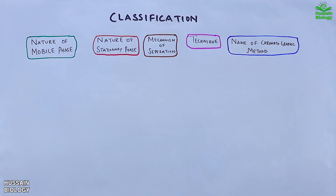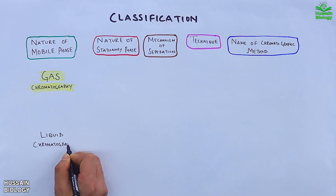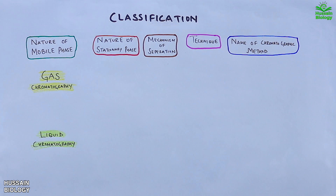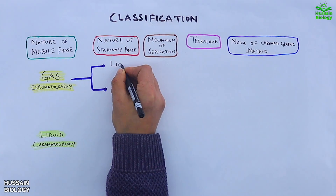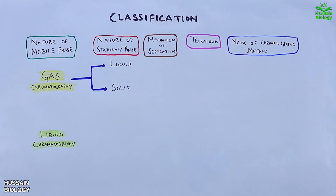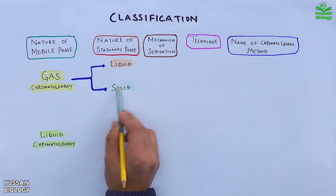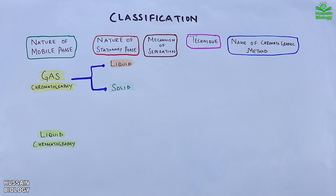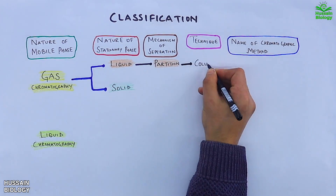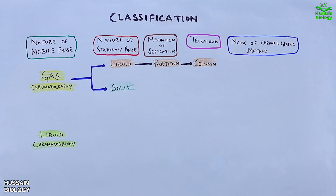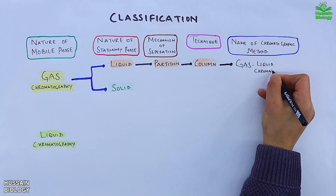First we look at the nature of mobile phase, where chromatography is classified into gas chromatography and liquid chromatography. Gas chromatography is further classified into liquid and solid chromatography based on the nature of stationary phase. The liquid stationary phase under gas chromatography is classified by mechanism into partition chromatography, and by technique into column chromatography — this is named gas liquid chromatography.